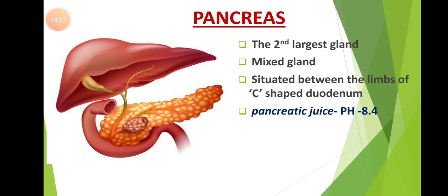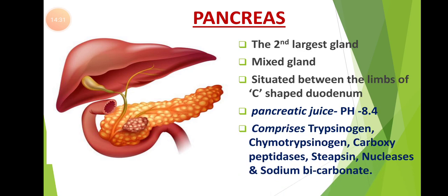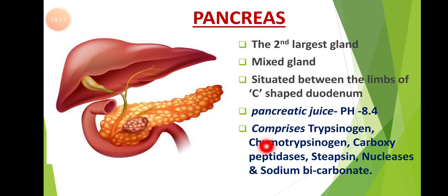The juice secreted by the pancreas is called pancreatic juice. The pH of this pancreatic juice is 8.4. This pancreatic juice contains trypsinogen, chymotrypsinogen, carboxypeptidases, steapsin (pancreatic lipase), nucleases, sodium bicarbonate, and pancreatic amylase. Trypsinogen and chymotrypsinogen are responsible for the digestion of proteins. Steapsin (pancreatic lipase) is responsible for the digestion of lipids and fats. Nucleases — including DNases and RNases — are responsible for the digestion of DNA and RNA. Sodium bicarbonate is responsible for maintenance of alkaline pH.